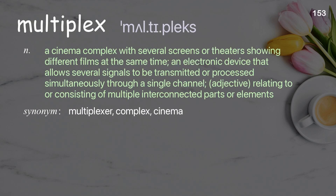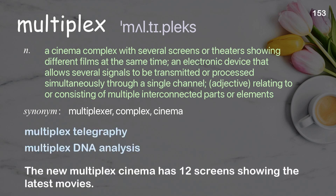Multiplex: a cinema complex with several screens or theaters showing different films at the same time; an electronic device that allows several signals to be transmitted or processed simultaneously through a single channel. Adjective: relating to or consisting of multiple interconnected parts or elements. Examples: multiplex telegraphy, multiplex DNA analysis. The new multiplex cinema has 12 screens showing the latest movies.